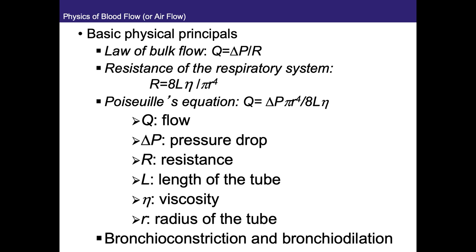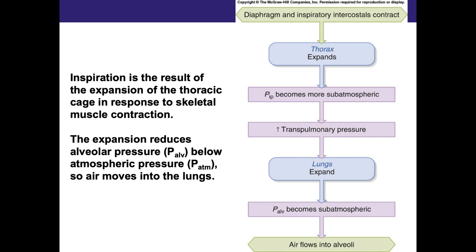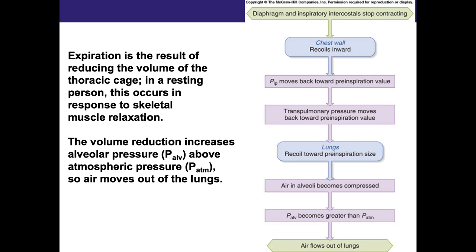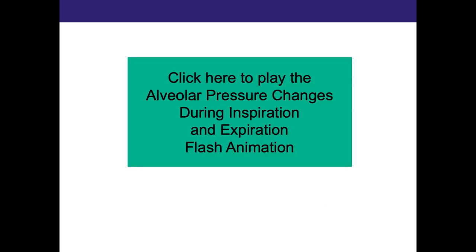These flow charts are to help with your studying. One shows what happens with intrapleural pressure, transpulmonary pressure, and air flowing into the alveoli during inhalation. The other shows what happens with the same pressures leading to air flowing out of the lungs with expiration. There's also an animation already posted online — if you have trouble accessing the SWF files, just let me know and I'll put them on YouTube.